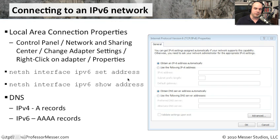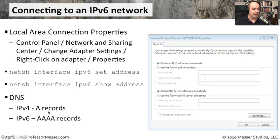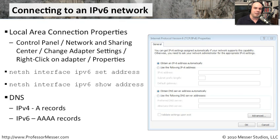One thing to keep in mind when using IPv6 is name resolution. When going to a DNS server, an A record refers to the old IPv4 address. But if you're requesting an IPv6 host, what will be returned is an AAAA record. So if you do an nslookup and see an AAAA record, that means it's an IPv6 address.